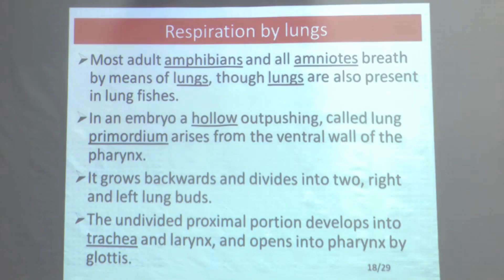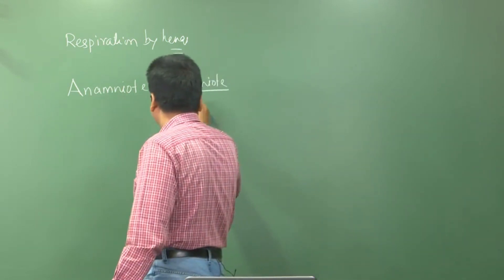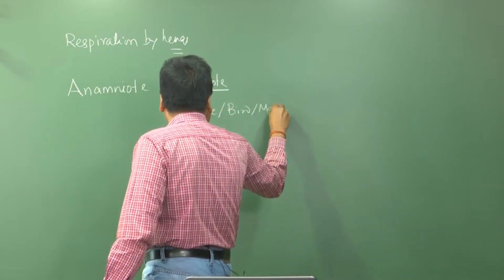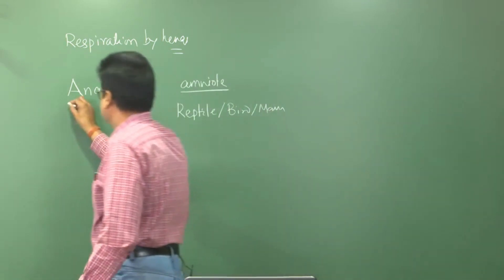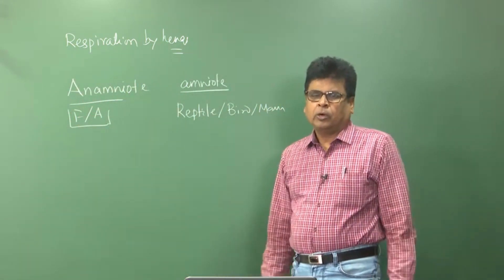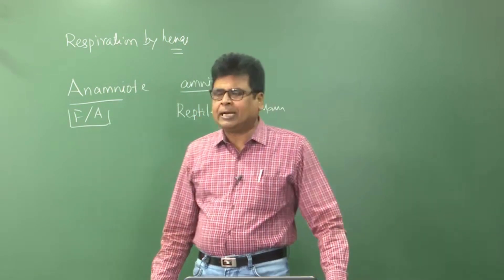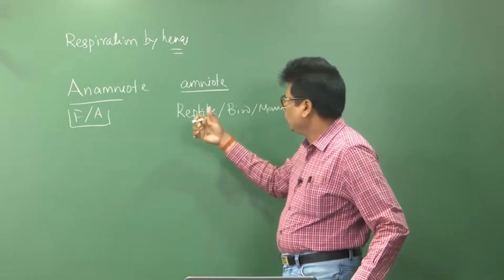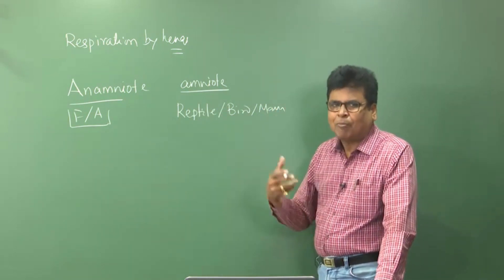Most adult amphibians and the amniotes also respire by lungs. A very fundamental distinction: one group is the anamniotes and the other is the amniotes. Amniotes include reptiles, birds, and mammals, whereas fishes and amphibians are called anamniotes. Most structures present in amniotes are not present in anamniotes, because anamniotes have an inferior structural configuration, and in the course of evolution amniotes possess more modified and advanced structures.